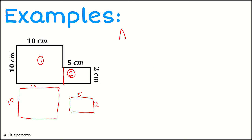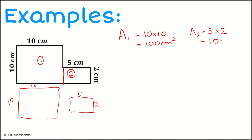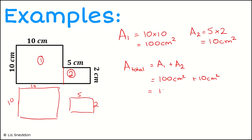Let's do the working for area 1. It's a square, so base times height: 10 times 10 gives an area of 100 centimetres squared. Then area 2 is a rectangle, so base times height: 5 centimetres times 2 centimetres gives an area of 10 centimetres squared. So to find the total area, I'm going to add area 1 and area 2 together: 100 centimetres squared plus 10 centimetres squared gives a total area of 110 centimetres squared.